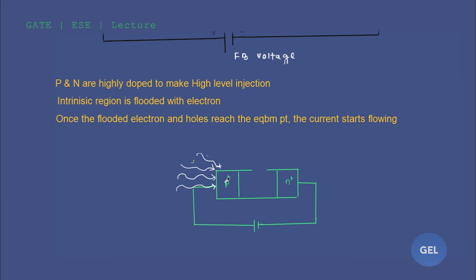The student asks: does incident from this side mean the rear end? The instructor clarifies: no, this is your actual top end. The diode is always connected such that p is at the top, then depletion layer, then n — and this is how it gets connected to the voltage source.